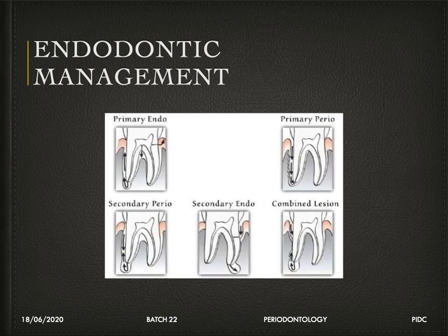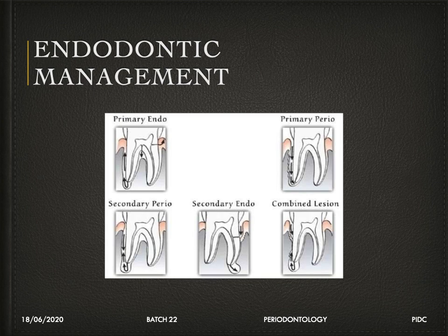The next interdisciplinary relationship is endodontics — perio-endo management. The classification states there can be primary perio lesions, primary endo lesions, or a combination of both. Endodontic disease can lead to periodontitis and vice versa. Treatment follows the type of lesion: a primary endodontic lesion may resolve periodontal involvement after endodontic treatment alone; a primary periodontal lesion that caused endodontic sequelae requires treatment of both lesions to restore health.